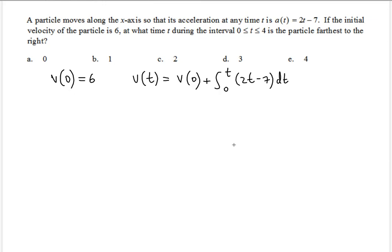So we know that it's going to be equal to 6, because that's the initial value, plus t squared — because the power rule says the power increases by 1 and you divide by the resulting power, so 2 over 2 gives t squared. Notice that we evaluate from zero to t, so we get t squared minus zero, which is just t squared.